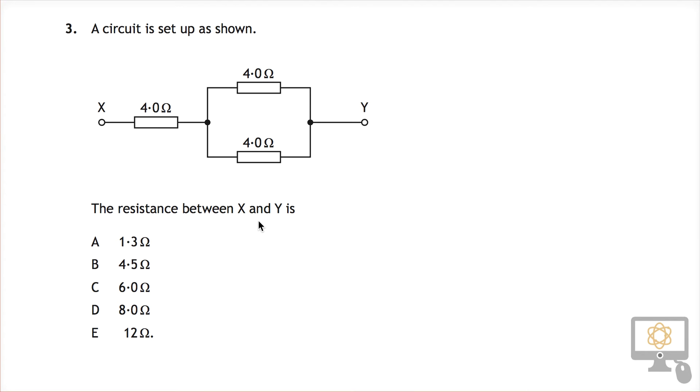The question is: what's the resistance between X and Y? So effectively, what we have is between X we have a resistor which is 4 ohms, and we have another resistor which is effectively the combination of these two resistors here in parallel.